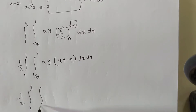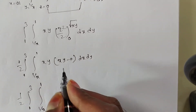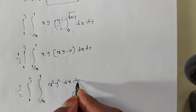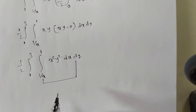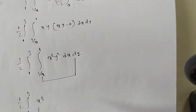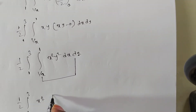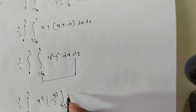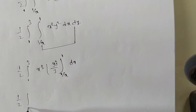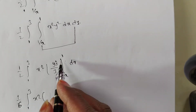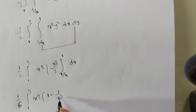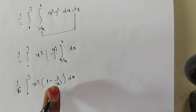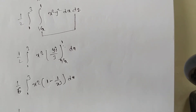So we have (1/2) times integral from 1 to 3, integral from 1/x to 1, x·y times x·y = x squared·y squared dy dx. Now y is dependent on x, so first integrate with respect to y. Keep x squared outside; y squared integration is y cubed by 3, limits from 1/x to 1, into dx. Then (1/2)(1/3) = 1/6 times x squared. Upper limit: 1 cubed = 1; lower limit: (1/x) cubed = 1/x cubed.